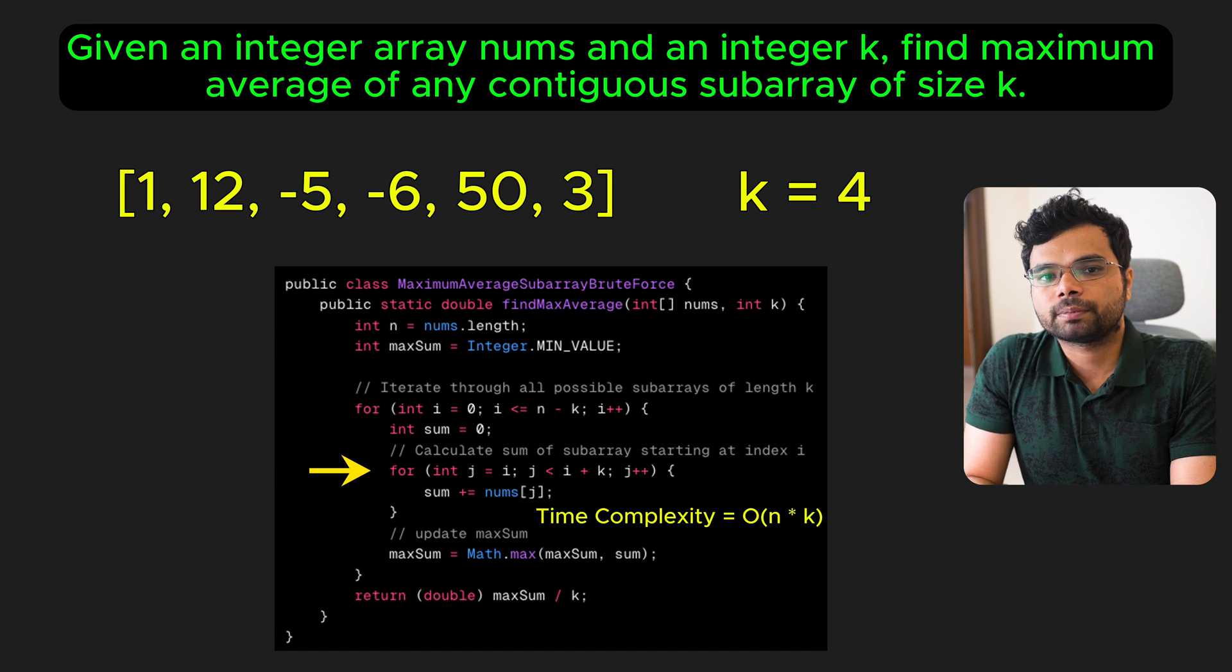Since for every starting point of a sub-array, we iterate k times to calculate the sum. This leads to a lot of repetitive calculations, since many elements are included in multiple sub-arrays. We can optimize the solution to order of n using the sliding window pattern.